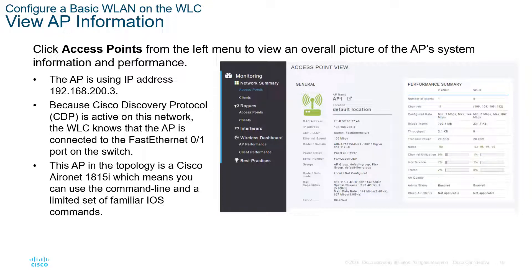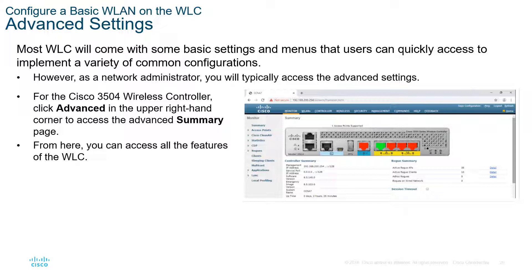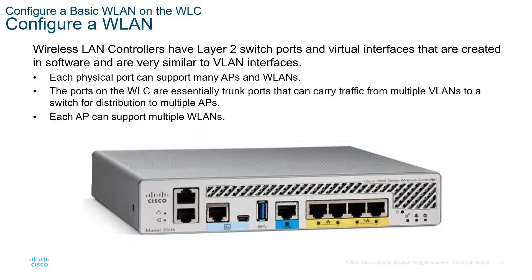Once you're in the controller, click on the access points to see access point information. This is a very common page for loading our wireless LAN controllers. We can click on things like Monitor, Advanced, or the Summary pages. This is what the physical device looks like — it is a layer 2 switch port and also has virtual interfaces created in software, similar to VLANs. The ports on the wireless controller are essentially trunk ports that can carry traffic between multiple VLANs. The device has a management port and switch ports — pay attention to the labeling.